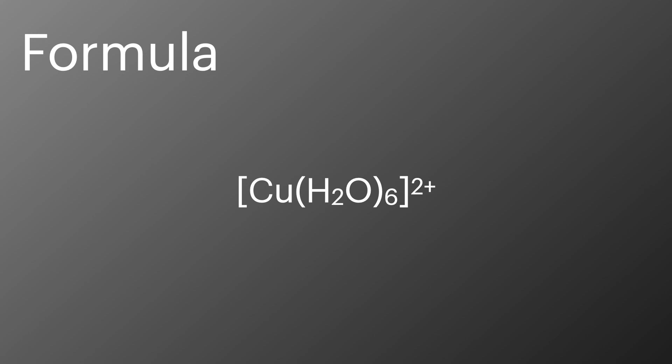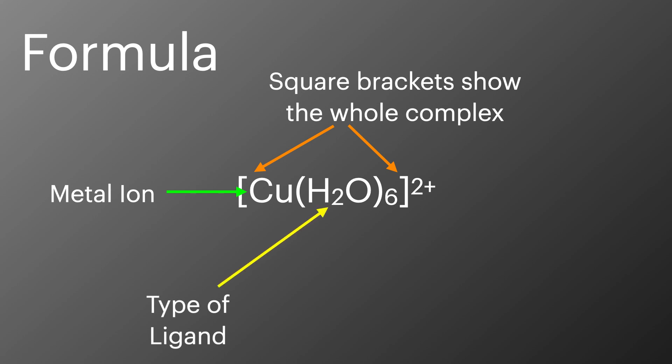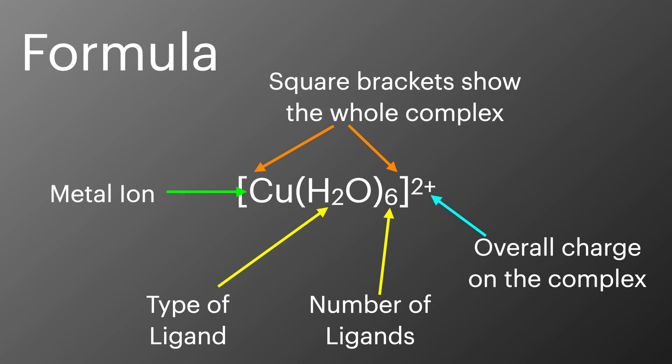When it comes to the formula for a complex, we always put all the atoms inside square brackets — this shows where the complex starts and ends. The first atom we put in is the metal ion, followed by the ligands. If ligands have multiple atoms, such as water or ammonia, we put them inside round brackets. After the square brackets we put the number of ligands present, and then the overall charge is placed outside the square brackets.